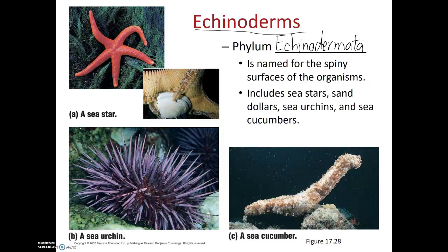Echinoderms are literally named for the spiny surfaces of these organisms. This is most exemplified in the sea urchin, but there are several other echinoderms as well, including sea cucumbers, sea stars, and crinoids. This group of animals is entirely marine, meaning they live exclusively within the oceans. There are no freshwater echinoderms and no terrestrial echinoderms either.